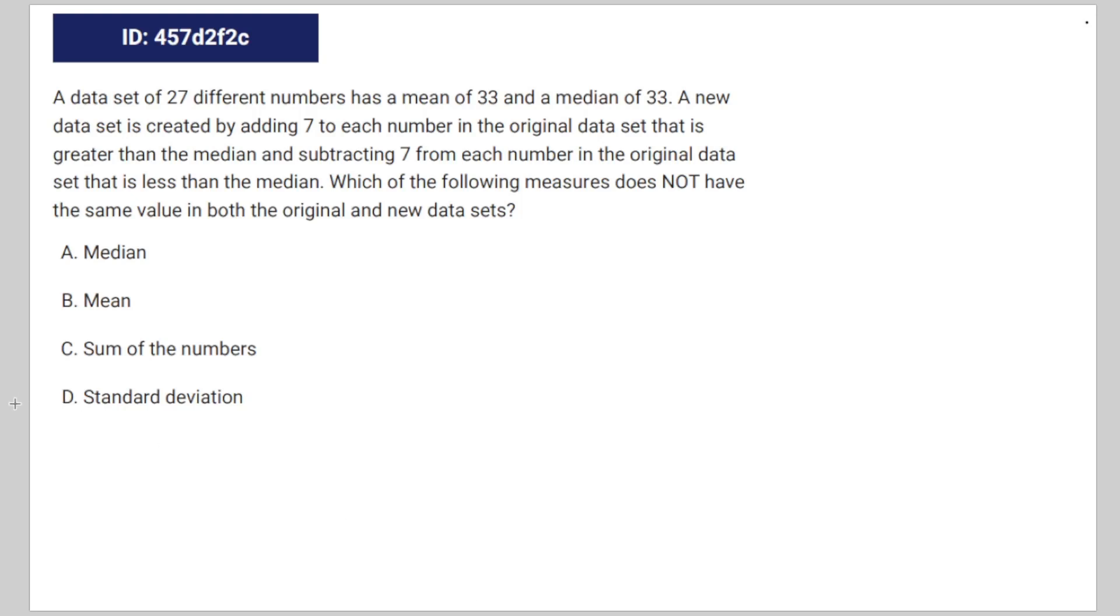We're given the following math problem: a data set of 27 different numbers has a mean of 33 and a median of 33. So the mean and the median are equal to each other.